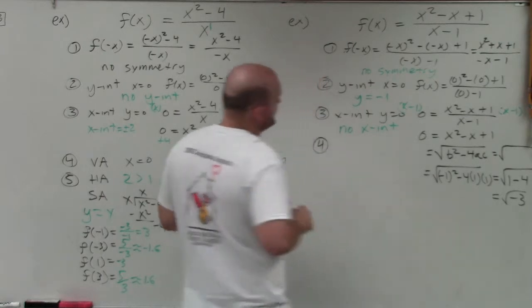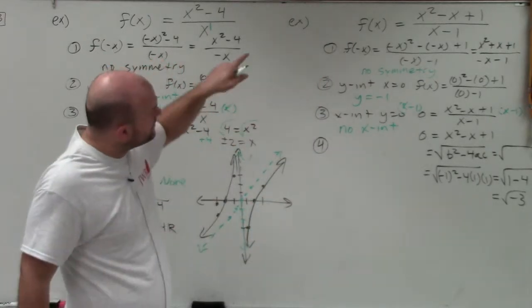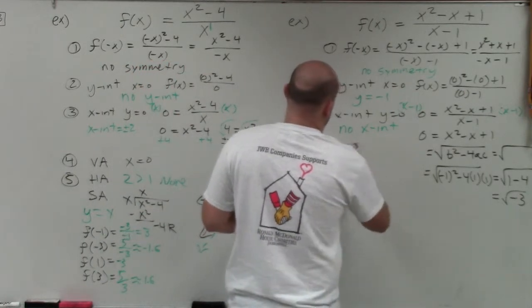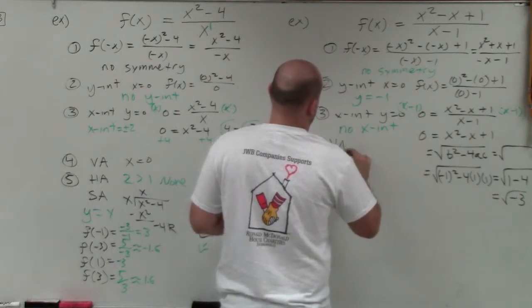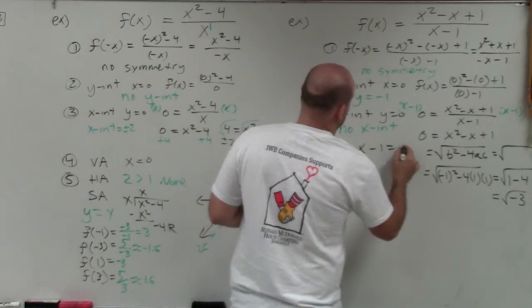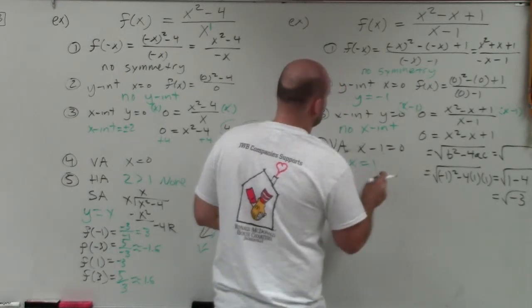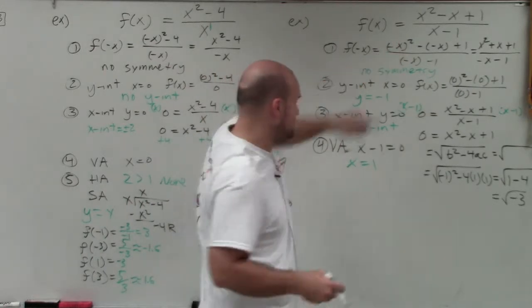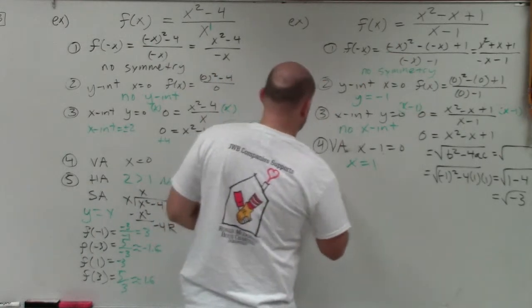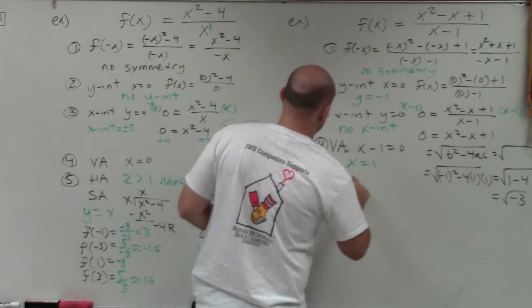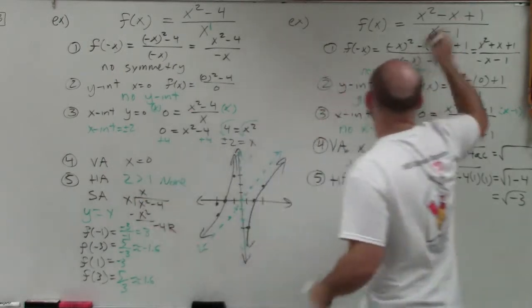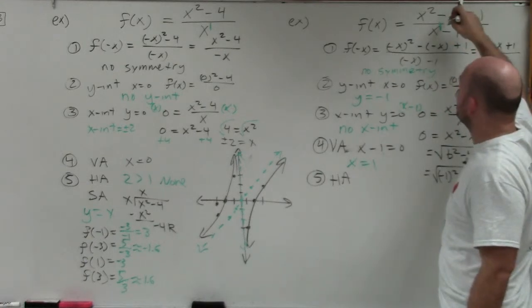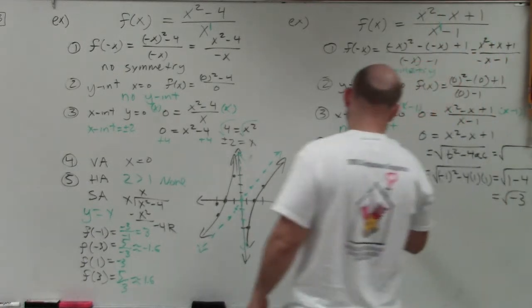Next, determine the vertical asymptote. Set the denominator equal to 0: x minus 1 equals 0, so x equals 1 is the vertical asymptote. Then for the horizontal asymptote — since the degree in our denominator is smaller than the degree in our numerator, there is no horizontal asymptote.